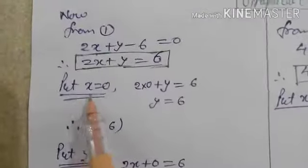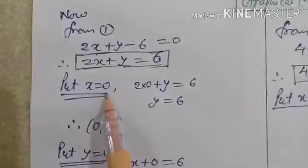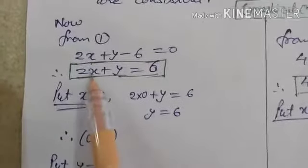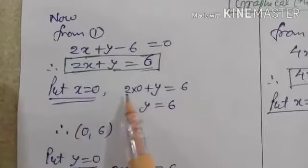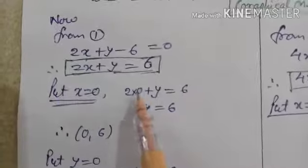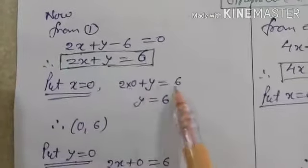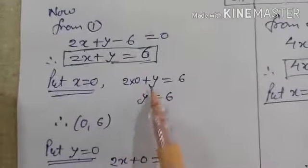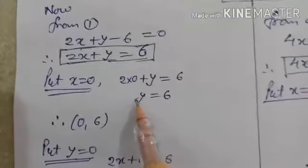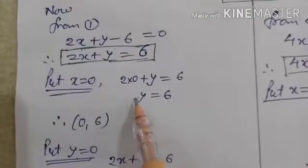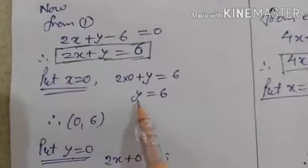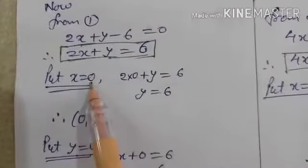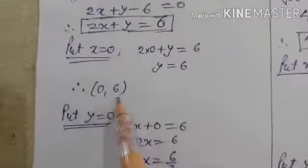Putting x equal to 0: 2 into 0 plus y equals 6. Since 2 into 0 is 0, only y remains. So y is equal to 6. Our first point is x equal to 0 and y equal to 6, which is the point (0, 6).